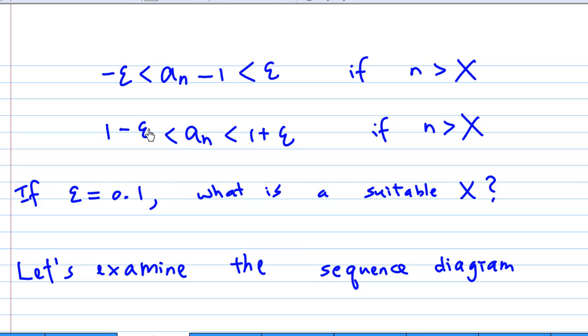So for different epsilon, you get different X. If ε = 0.1, what is a suitable X? We are examining this using a sequence diagram.